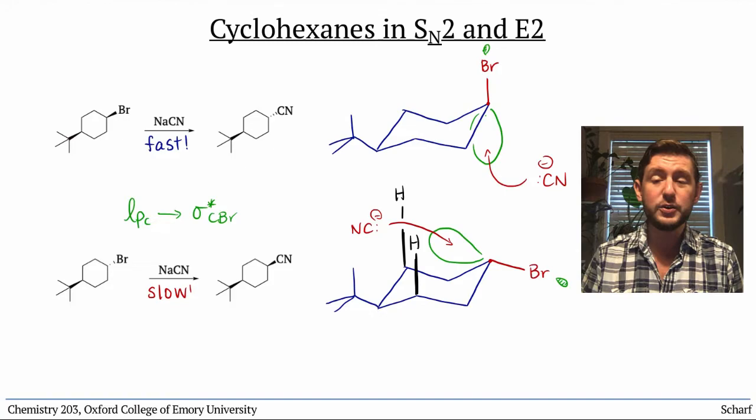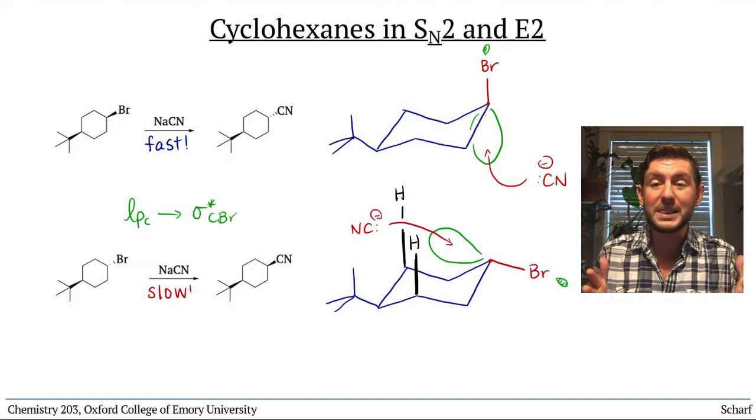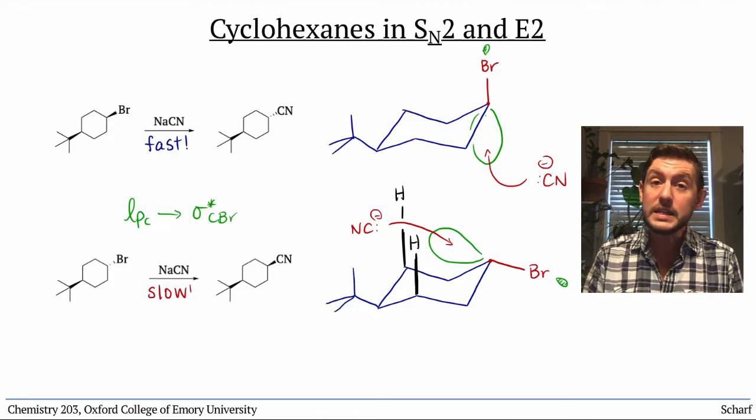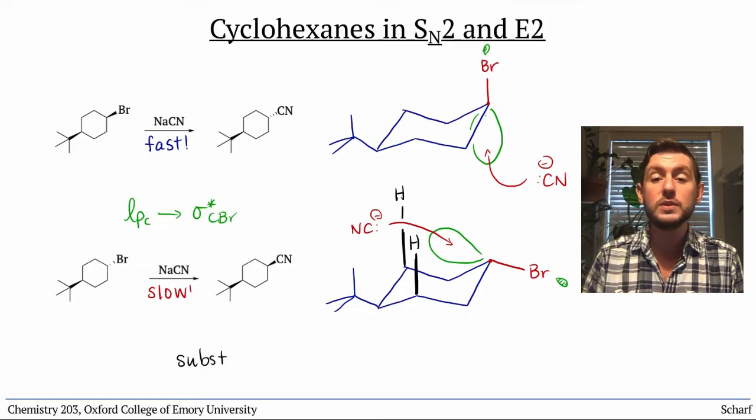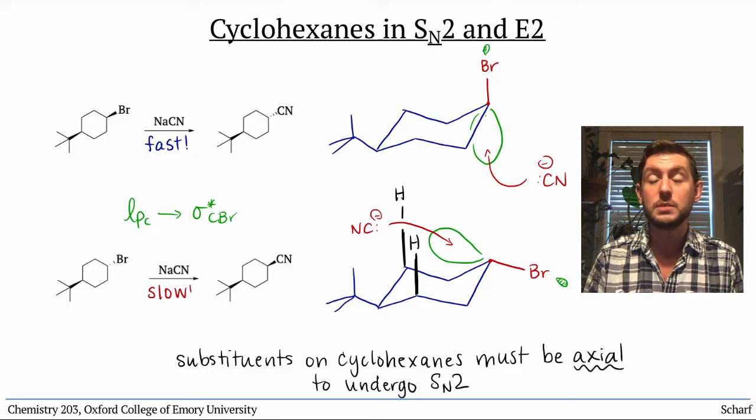That's hard for the nucleophile to do. It's like those substituents are blocking access to the sigma-star orbital. This is a general phenomenon. Substituents on a cyclohexane ring must be axial in order to undergo SN2 substitution.